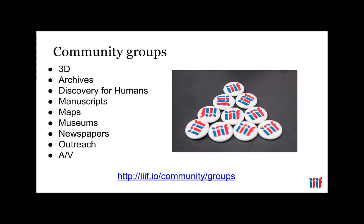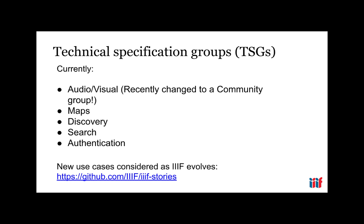Next are the Technical Specification Groups, or TSGs — we're big on acronyms here. These groups work together on laying groundwork for upcoming changes to the IIIF specifications, with the specific charge of writing documentation for different applications of IIIF. They work from user stories or use cases that community members submit through GitHub. For example, the AV or audiovisual TSG recently worked out what needed to happen for AV materials to be supported in the IIIF specifications. When that work was complete with the release of version three of the IIIF Image and Presentation APIs, they transitioned to a community group for interested people to share their knowledge as they implemented version three for their AV materials.